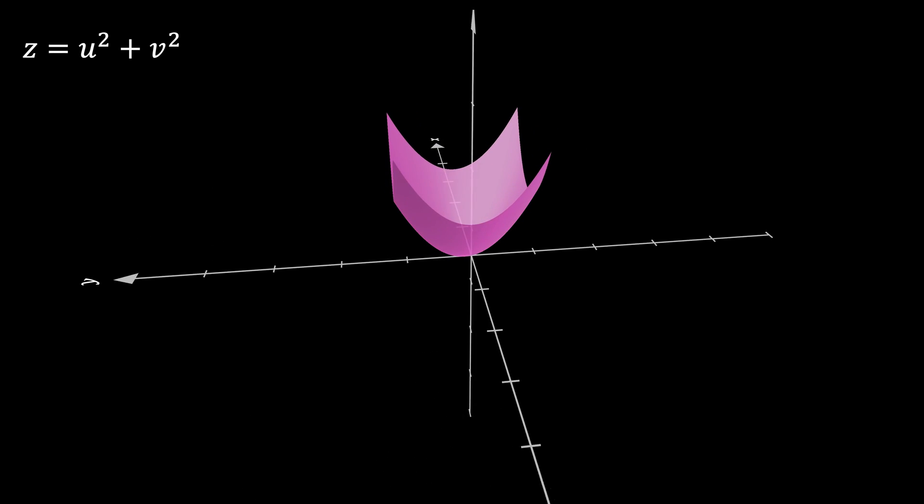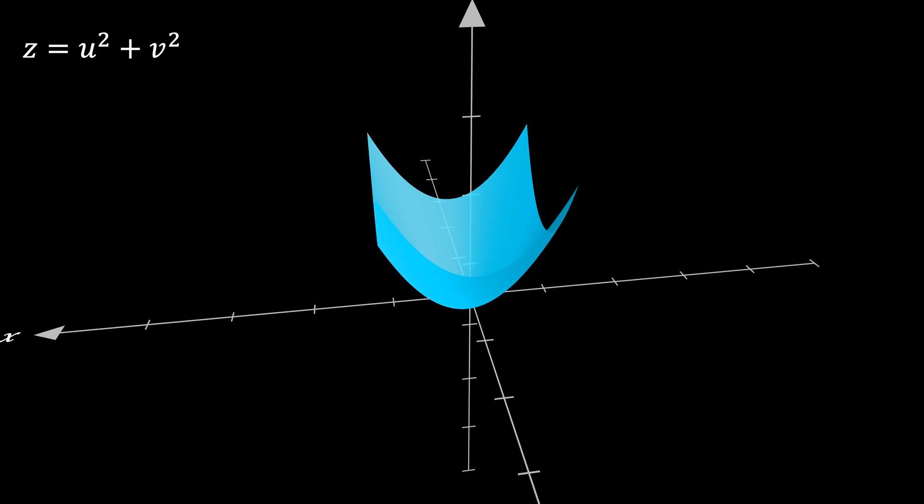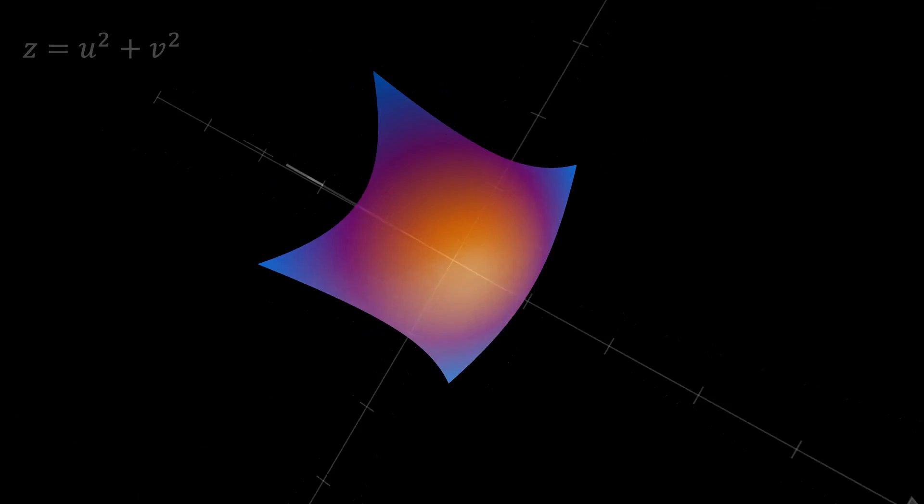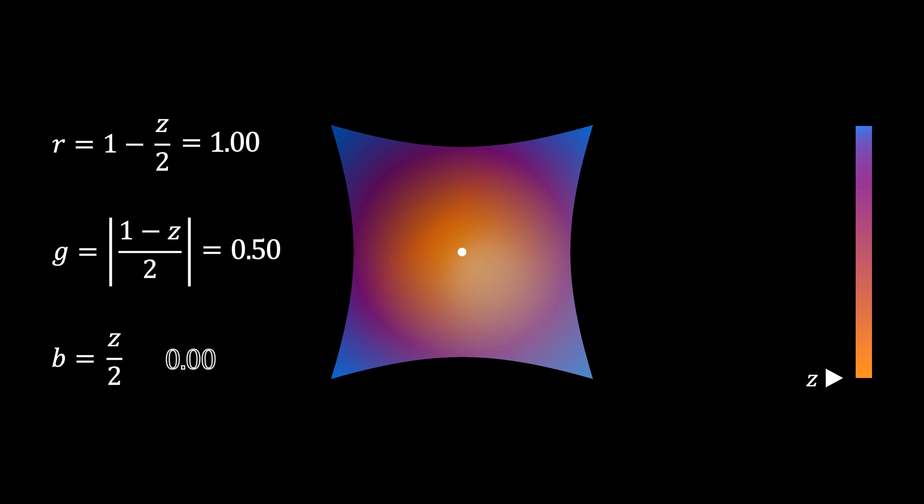Well, apart from that, Manim also provides a way to colorize the surface using RGB values using the setColorByRGBF method. This RGB function takes a point as input and returns an array of RGB values. Just like we passed every point in the Lorentz simulation, in the same way Manim GL feeds every point of the surface to the RGB function. Now, all we need is a function to customize the colors based on the points of the surface.